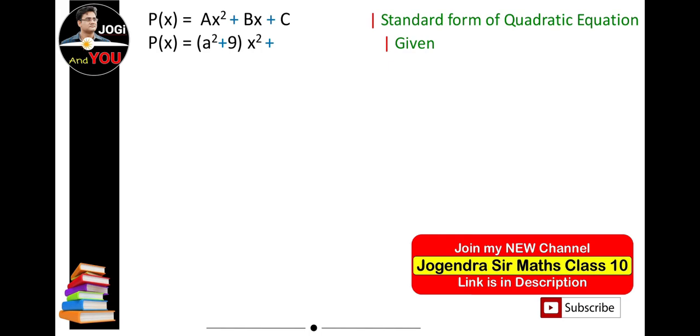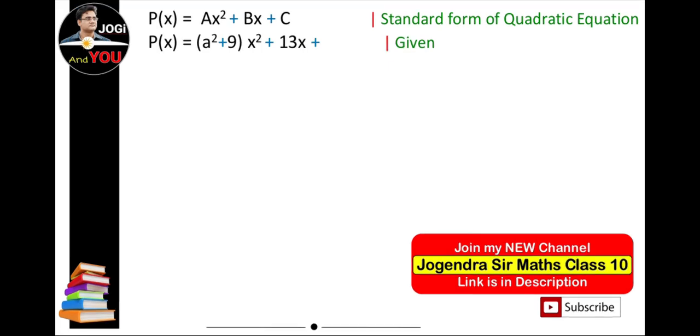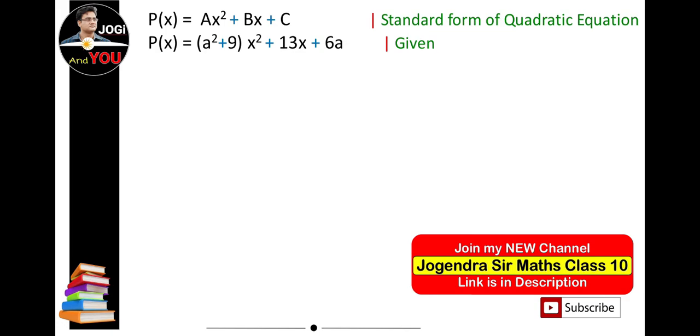Our given polynomial is (a² + 9)x² + 13x + 6a. By comparing both polynomials, we can compare the coefficients of x², x, and the constant. Here A = a² + 9, B = 13, and C = 6a.